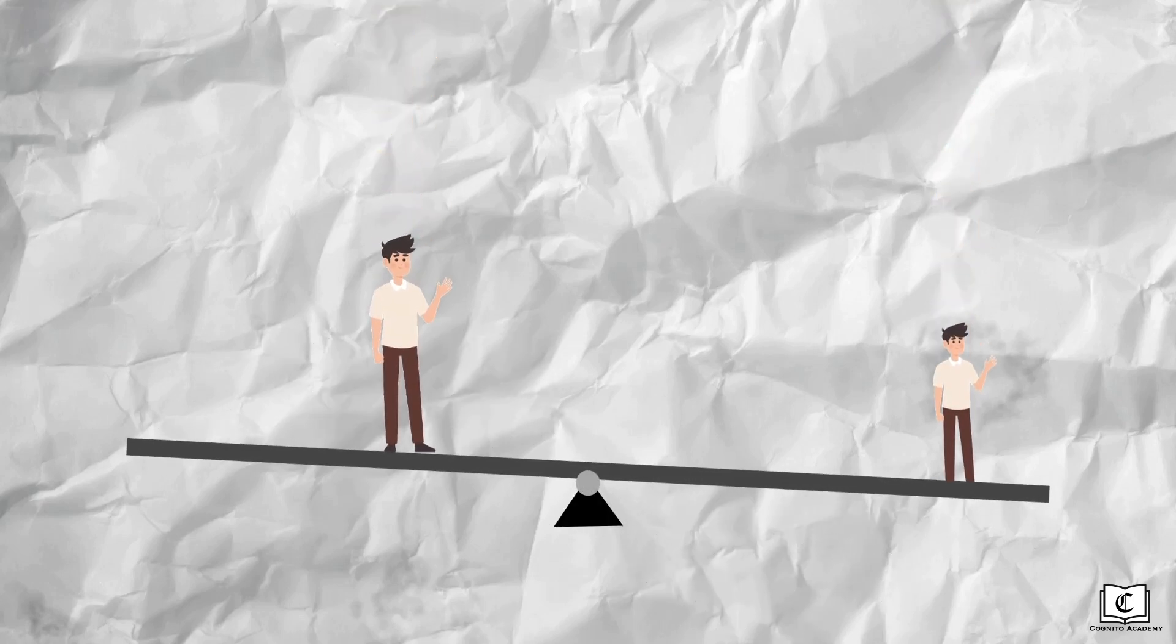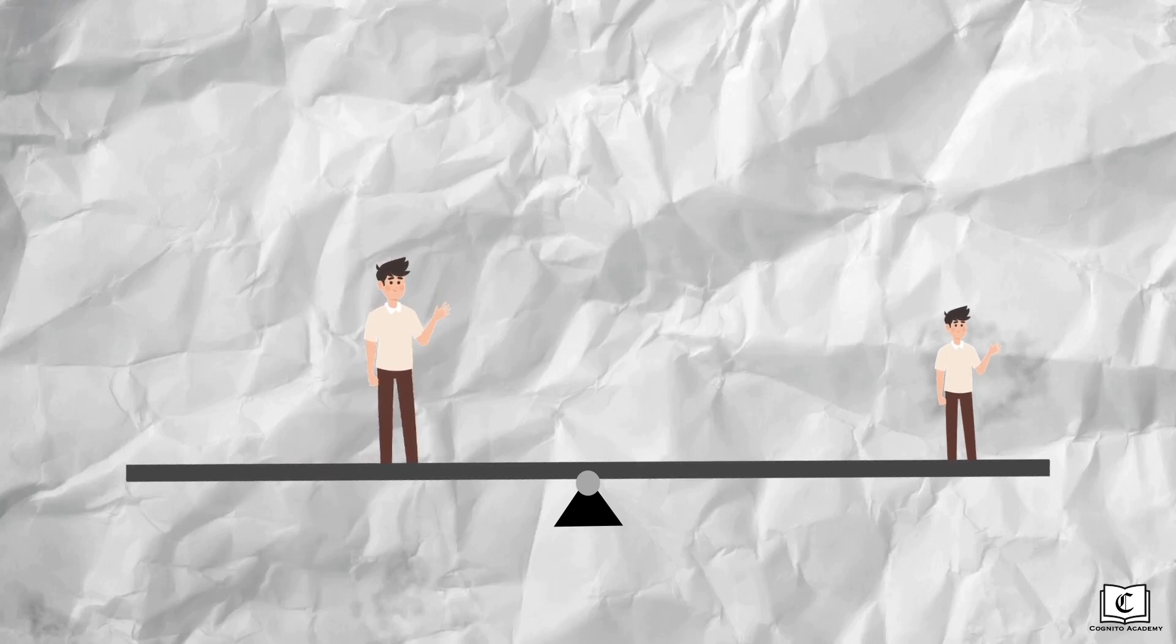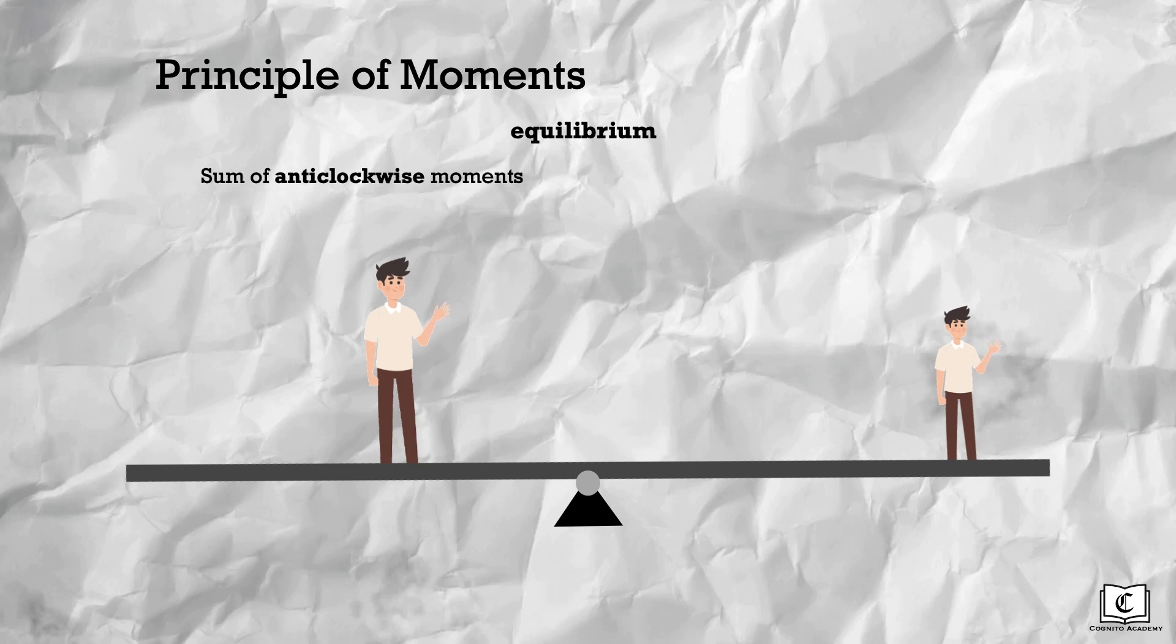So let's take a look at this scenario. Big Jill and small Jill land on the seesaw, and the seesaw is balanced. So why is this so? This is because of the principle of moments, which states that when a body is in equilibrium, the sum of the anticlockwise moments is equal to the sum of the clockwise moments about the same pivot.